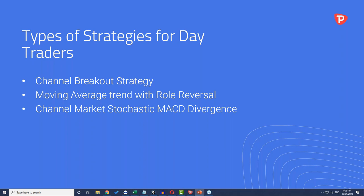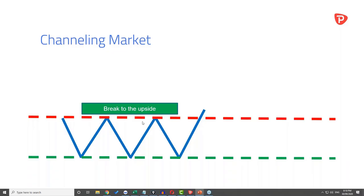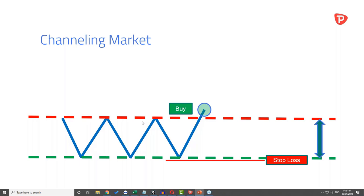There are three strategies to cover. First, understanding when the market is range-bound and trading it as a channel. Second, using moving averages with trend and role reversal. Third, channel markets with stochastic and MACD divergence. Today we'll cover channel breakouts and role reversal trend-based trades, bringing in indicators together. MACD divergence is a very powerful source of scalping and day trading, and we've done plenty of webinars covering it.